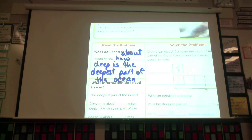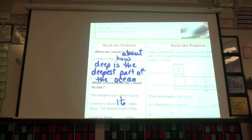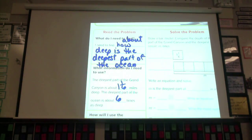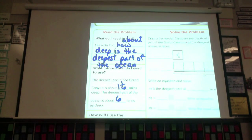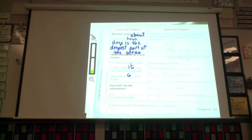Okay, what information will I need to use? Looking back at our question, it says the deepest part of the Grand Canyon is about how many miles, class? One and one-sixth. The deepest part of the ocean is about how many times as deep? Six. Six times as deep. Did I just get those? Where did I find those numbers? Nicholas? In the word problem. How am I going to use these numbers? The one and one-sixth and the six miles. What am I going to do with those? Brian? You're going to multiply them.